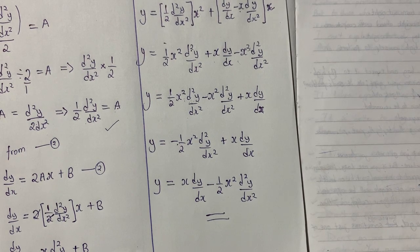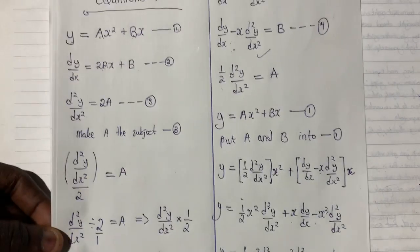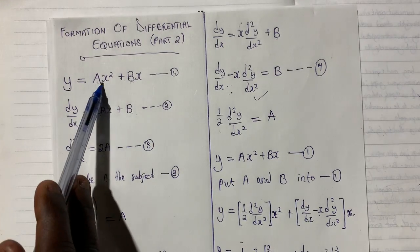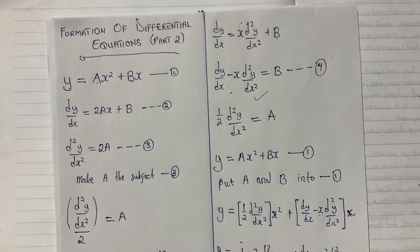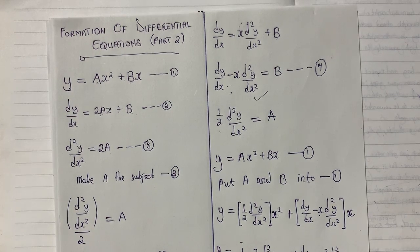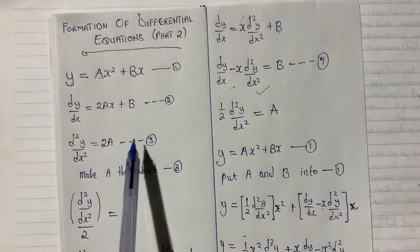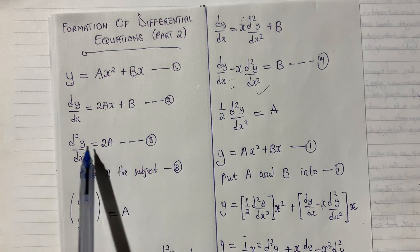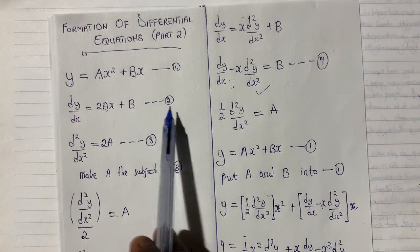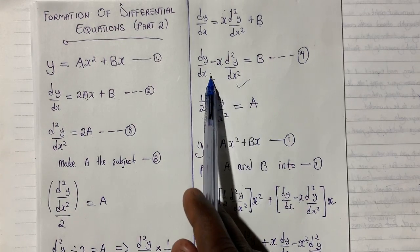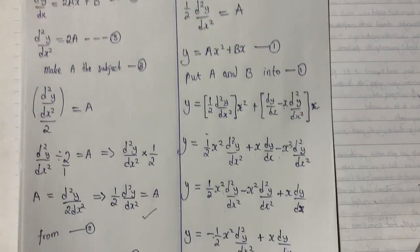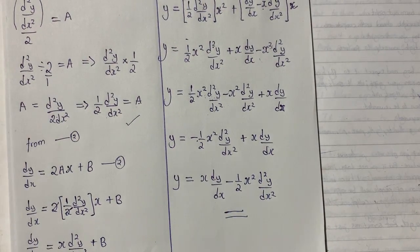This is our final answer. To summarize the method for forming differential equations: look at the given equation, check the arbitrary constants, and count them. Differentiate as many times as there are arbitrary constants. Then make one constant the subject, substitute to find the other, and substitute both back into the original equation to eliminate all constants and form the new differential equation.